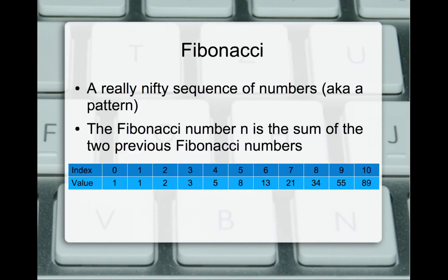The Fibonacci sequence appears throughout nature — in snails, flowers, shells, even the Milky Way galaxy. It's a more complex solution than factorial. Index 0 has value 1, index 1 has value 1, index 2 has value 2, index 3 has value 3, index 4 has value 5, and so on. The Fibonacci sequence is the sum of the two previous values. The base case is 0 and 1 because those have defined values. If you're not at 0 or 1, you go back to the one before and the one before that and add them together. It does not build up nearly as fast as factorial, however it is very complex on the back end.